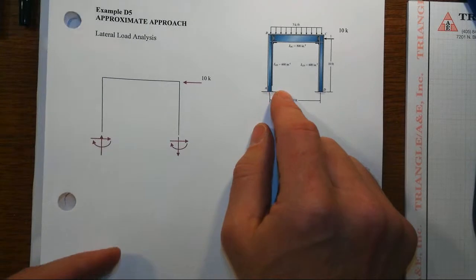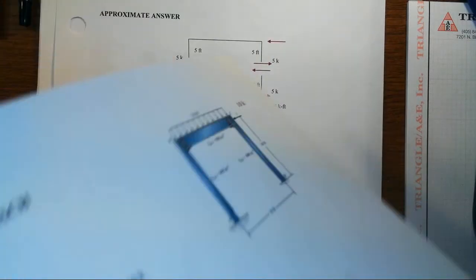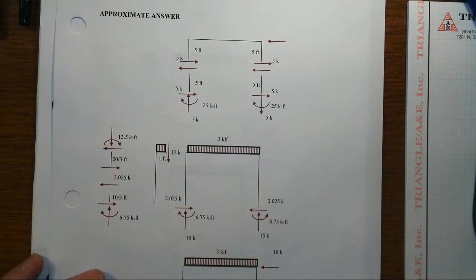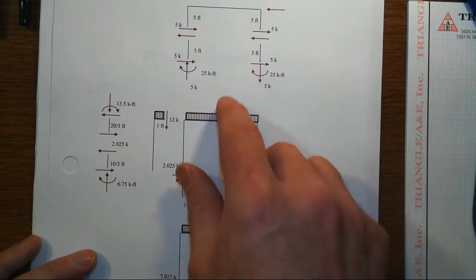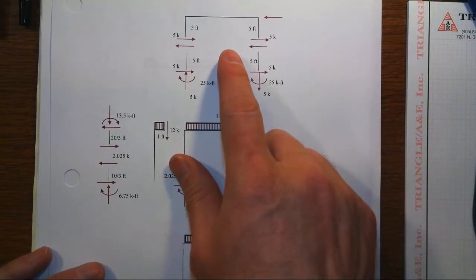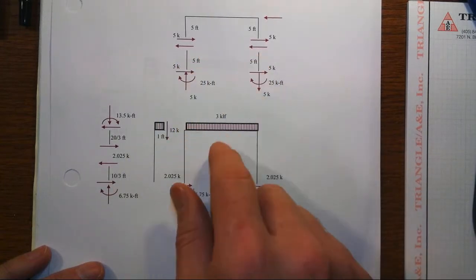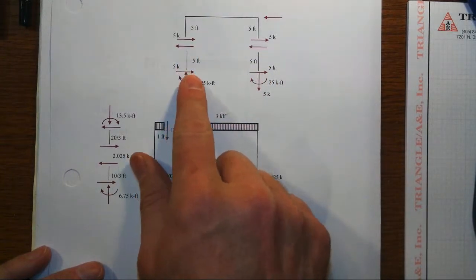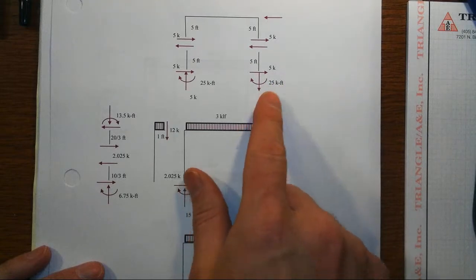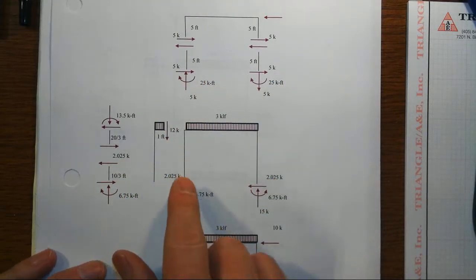This video takes you through a summary of that. If we assume the inflection points for the lateral load at the midpoints of the columns, and assume something about the relative stiffnesses of the beams, we end up with certain reactions down at the base.